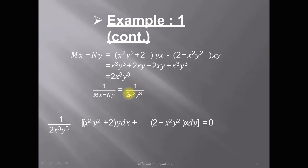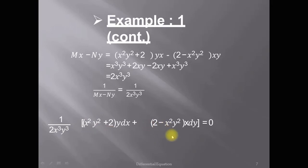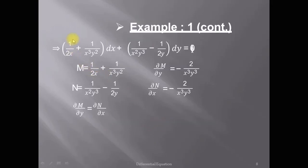Now, multiplying this integrating factor to the given differential equation (x²y² + 2y)dx + (2 - x²y²)x dy = 0, and after multiplying 1/(2x³y³) to M and N, we obtain the new differential equation: (1/(2x) + 1/(x³y²)) dx + (-1/(2y)) dy = 0.